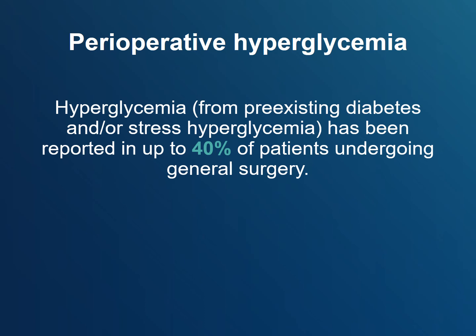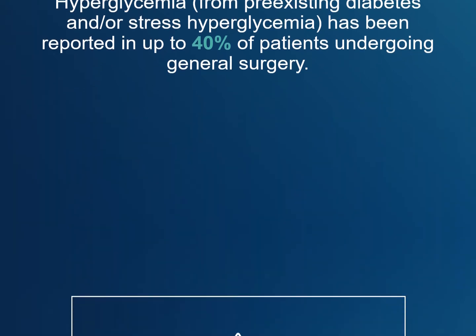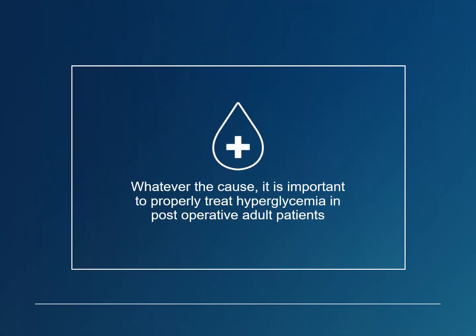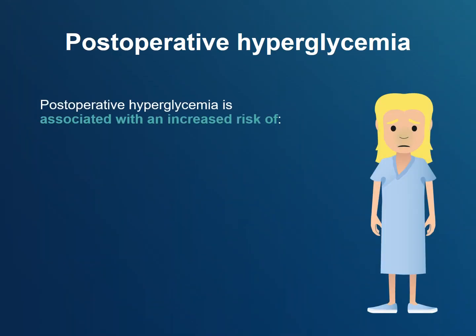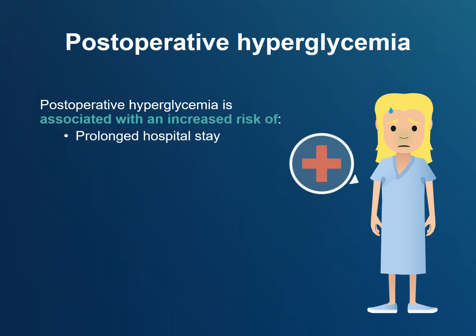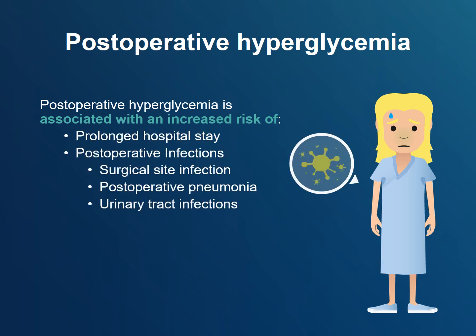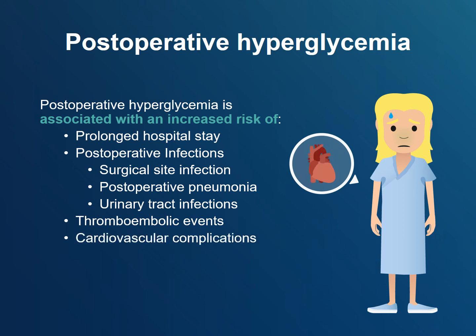Hyperglycemia from pre-existing diabetes or stress hyperglycemia has been reported in up to 40% of patients undergoing general surgery. Whatever the cause, it is important to properly treat hyperglycemia in post-operative patients, as it is associated with an increased risk of prolonged hospital stay, post-operative infections such as surgical site infections, pneumonia and urinary tract infections, thromboembolic events, cardiovascular complications, and renal insufficiency.